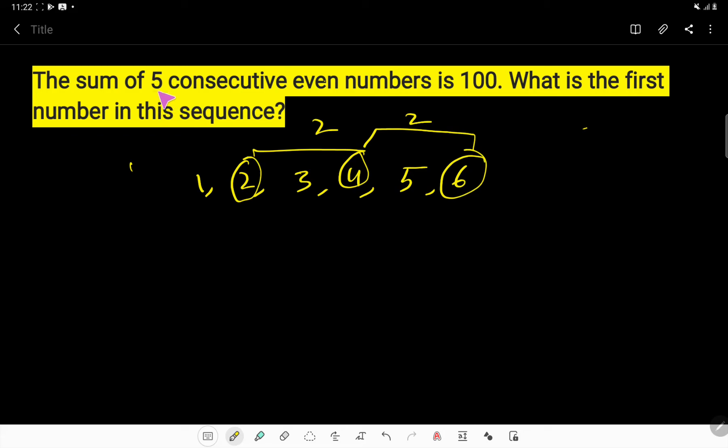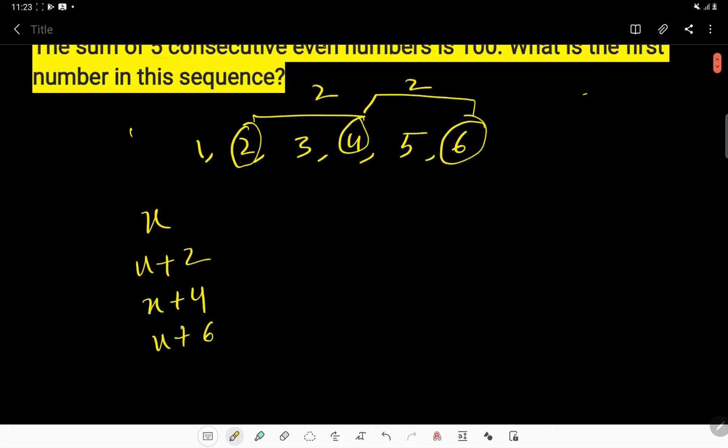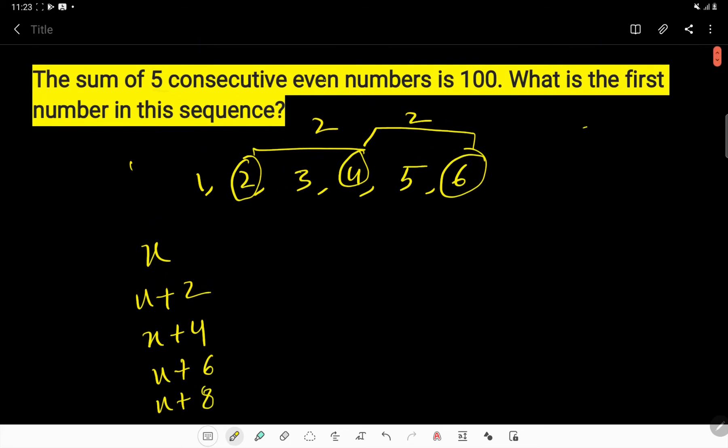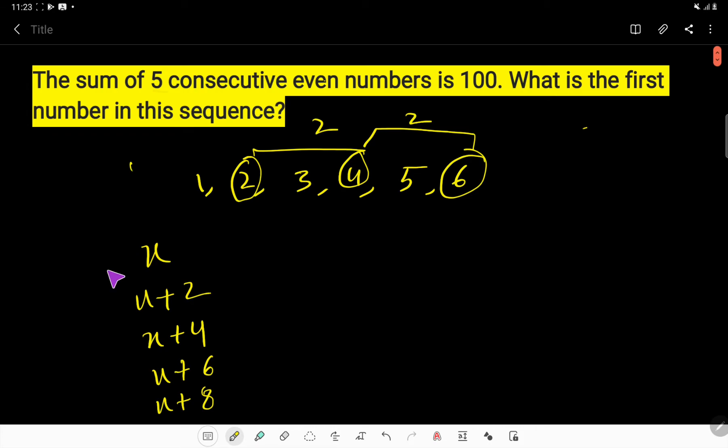So let's say 5 consecutive even numbers. The first number, let's say x. Then second number will be x plus 2 because the difference between these two numbers will be always 2. Then third number will be x plus 4. Then fourth number will be x plus 6. Then fifth number will be x plus 8. So these are the five numbers.